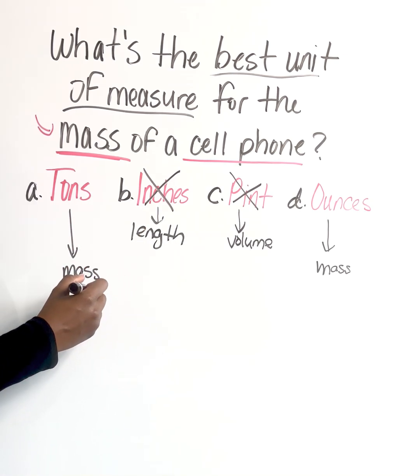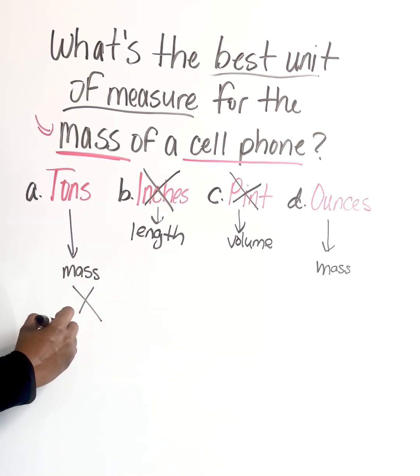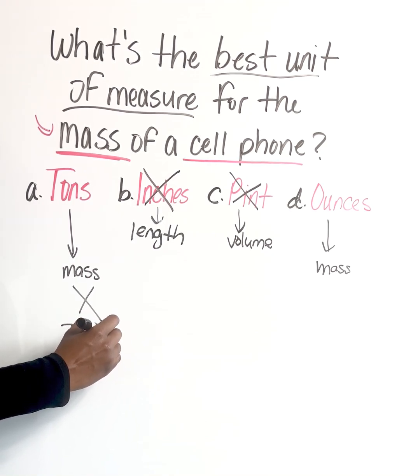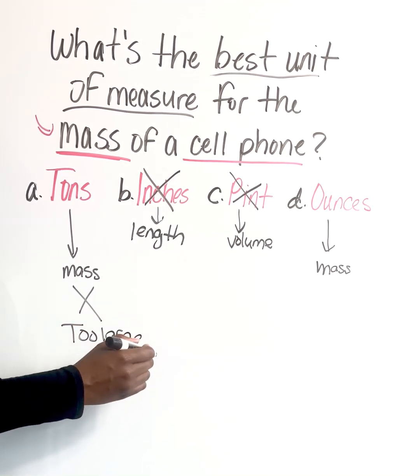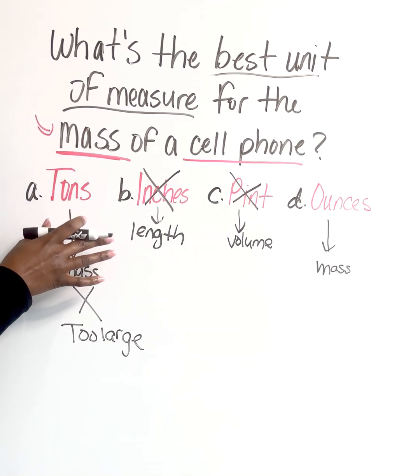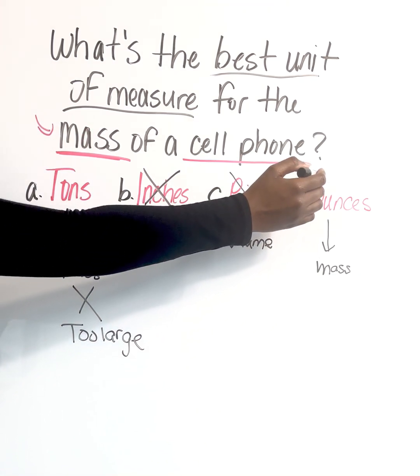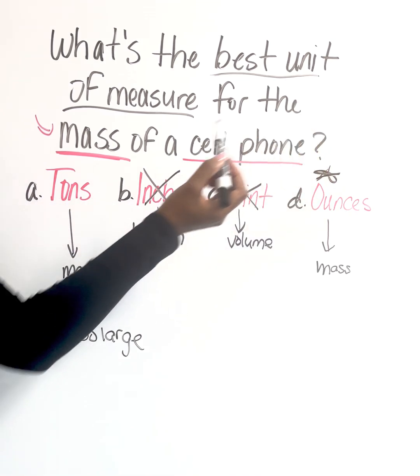I know immediately that tons has to be eliminated. Because why? Because it's too big. It's too large. It just doesn't make sense in this scenario. Of course, the best answer would be here, which would be in ounces.